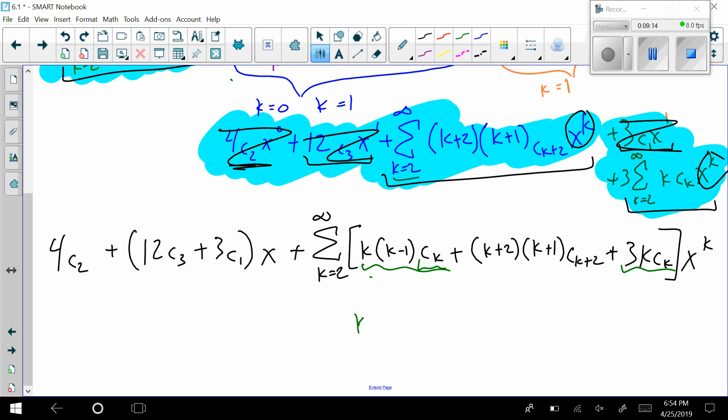So if I try to do that, that would be a k times k minus 1 plus 3k. Now all of those get a c sub k. Then I have plus k plus 2, k plus 1, c k plus 2. And then I close this whole thing, and it's x to the k times it, and all of this is being summed from k equals 2 to infinity.